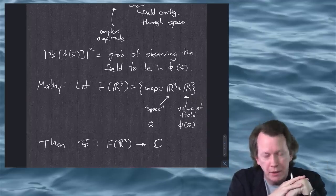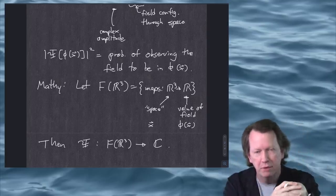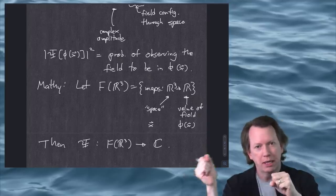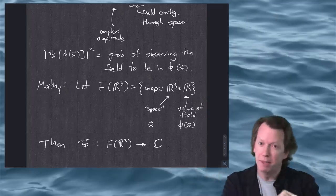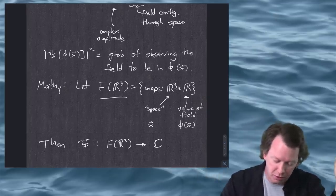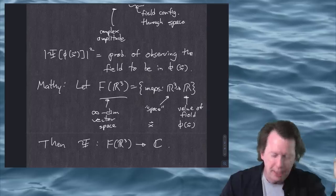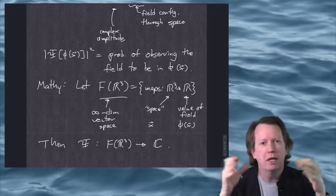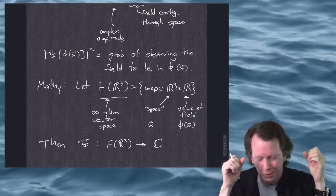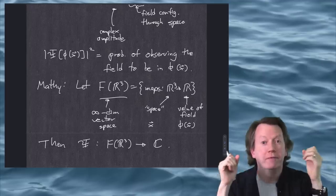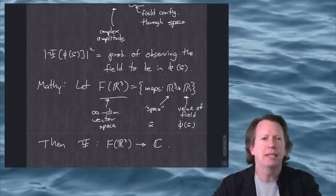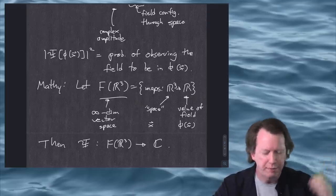Sometimes Psi as a function of a field configuration is referred to as a wave functional, because when you go from finite-dimensional vector spaces like R³ to infinite-dimensional vector spaces like F of R³ — which is an infinite-dimensional vector space — elements of infinite-dimensional spaces are functions, and functions of functions are functionals. But in quantum mechanics, we usually don't make big distinctions between finite- and infinite-dimensional vector spaces. So I'm just going to call it the wave function — this is just a wave function for a set of quantum fields.